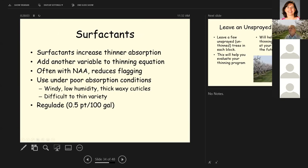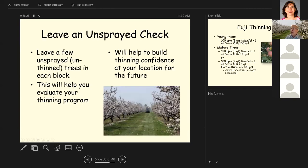Surfactants increase thinner absorption. And this is just another variable in the thinning equation. It'll reduce NAA flagging, as I mentioned before. And you use this under poor absorption conditions where it's windy, low humidity, where you've got thick wax cuticle on very difficult to thin varieties. Regulate is the one we have the most experience with at about half a pint per hundred gallons. It's always good to leave an unsprayed check in your orchard. So it helps you evaluate your thinning program and it gives you more confidence for thinning in the future.